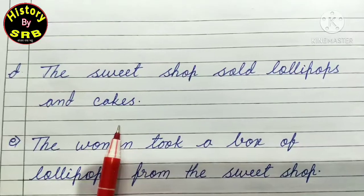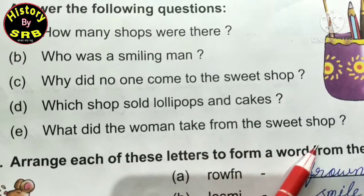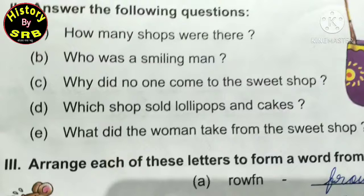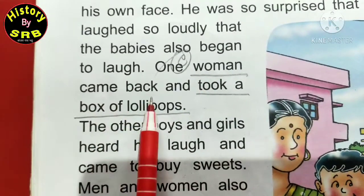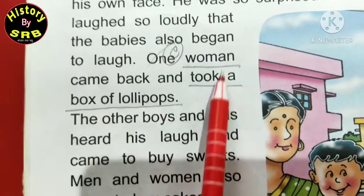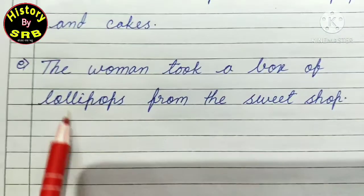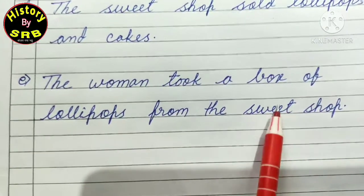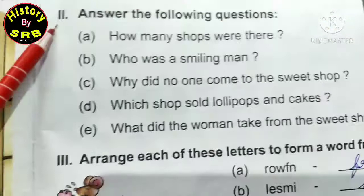Next question: 'What did the woman take from the sweet shop?' - yaani ek mahila ne sweet shop se kya khareeda? Book mein dekho: 'One woman came back and took a box of lollipops.' Answer aise likhna hai - 'The woman took a box of lollipops from the sweet shop.' Yeh aapka exercise question answer finish ho gaya, question number two tak.